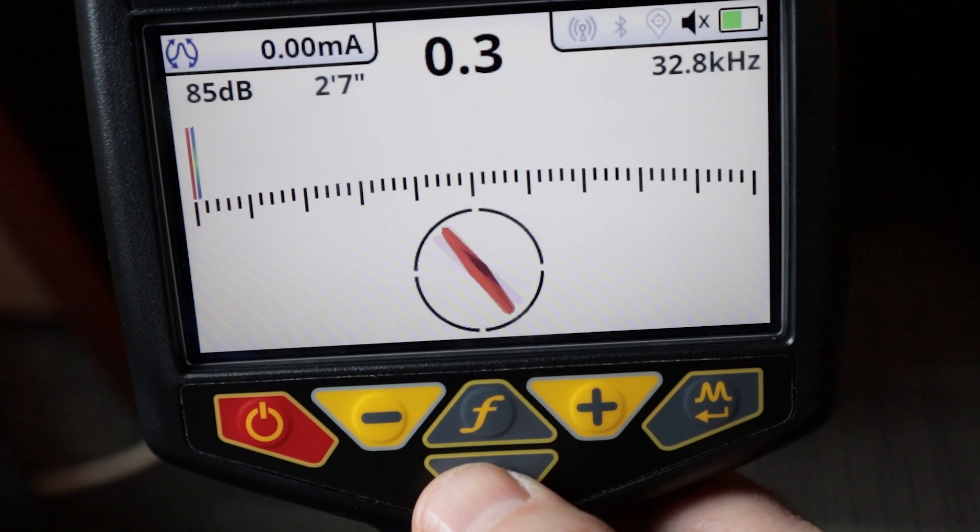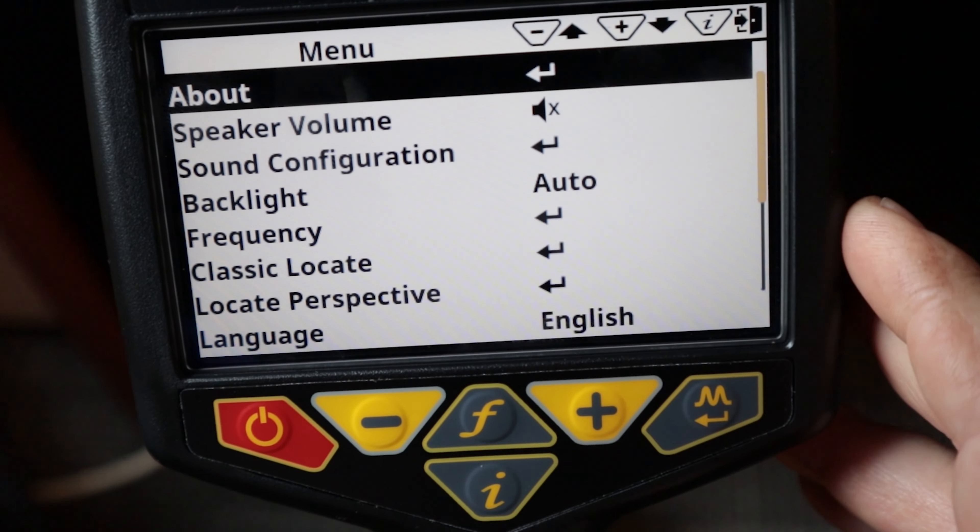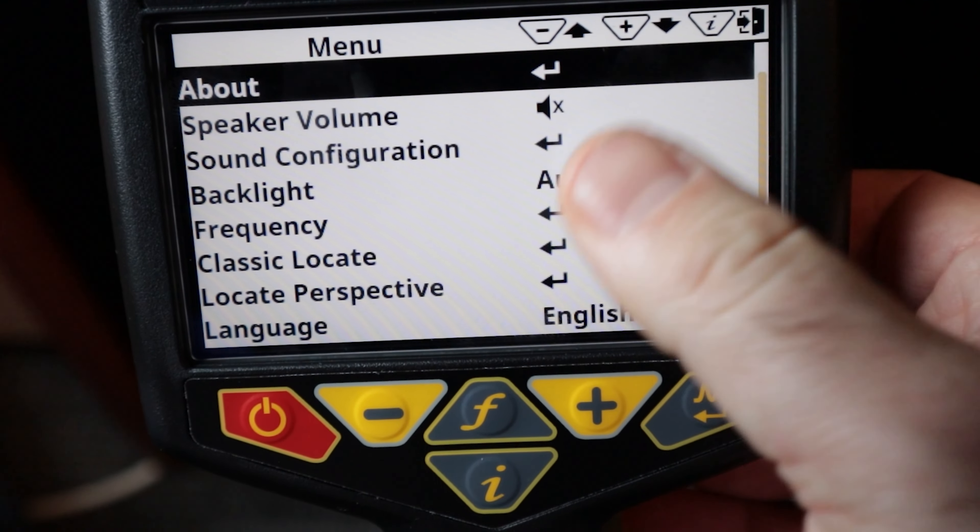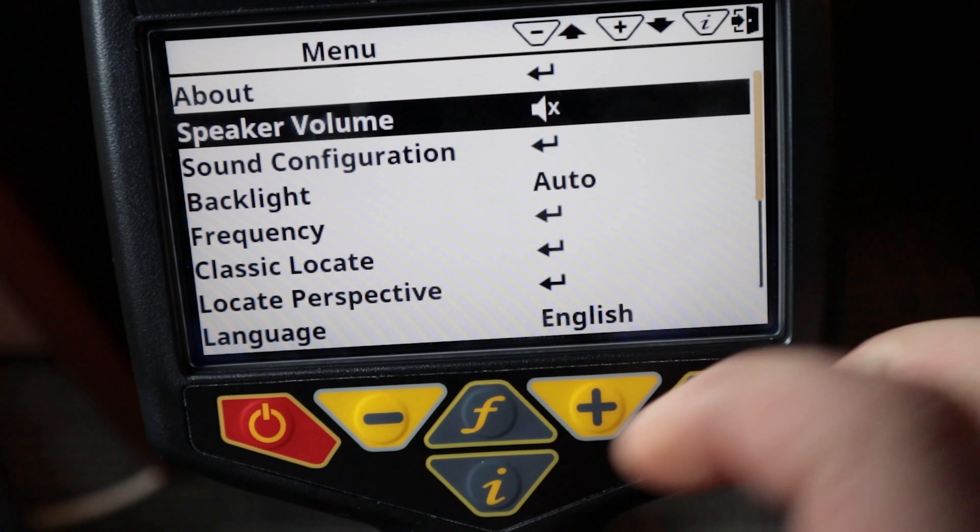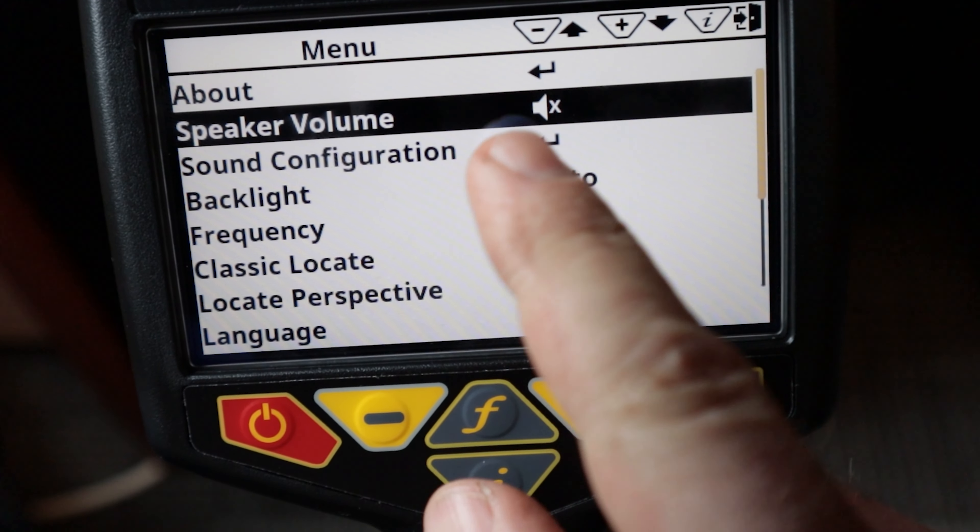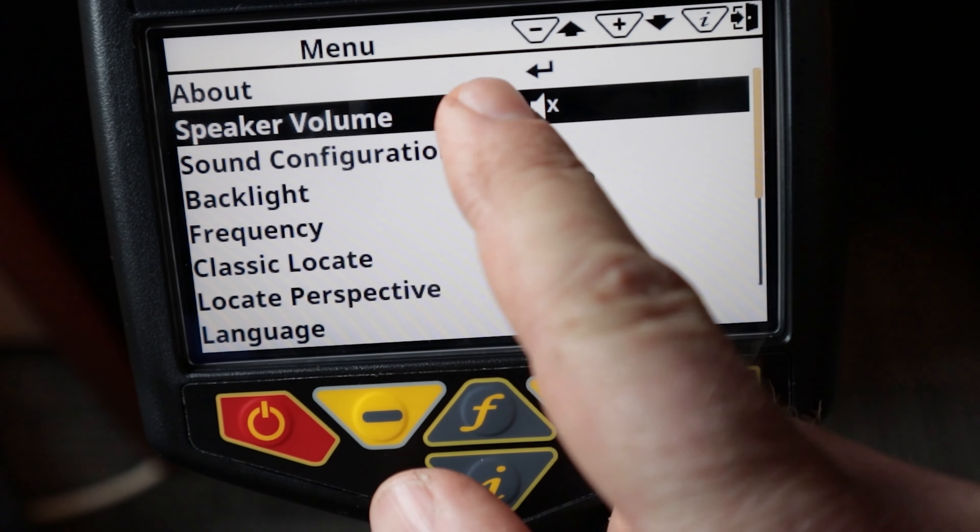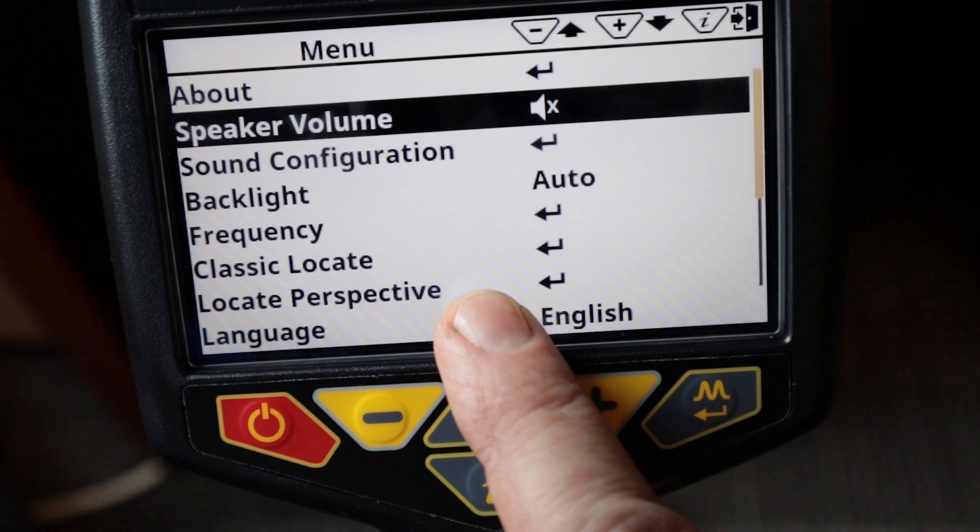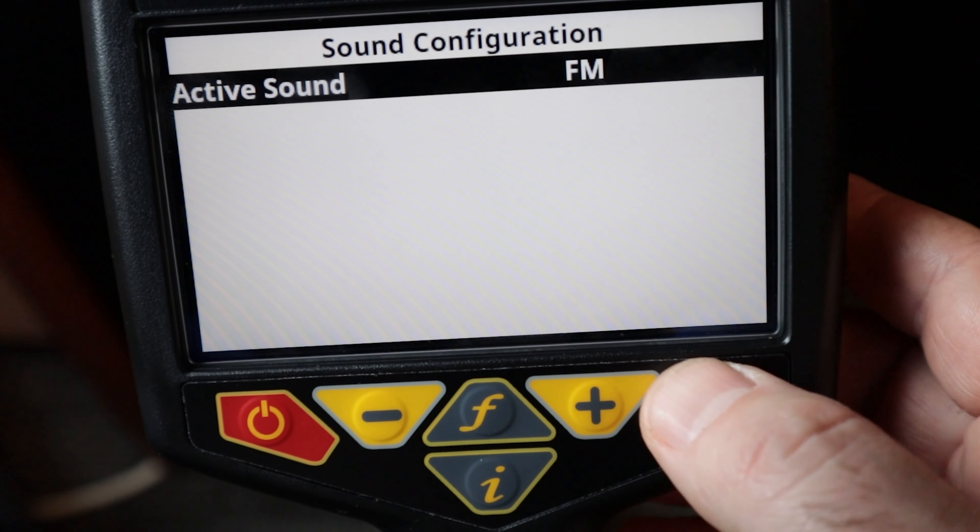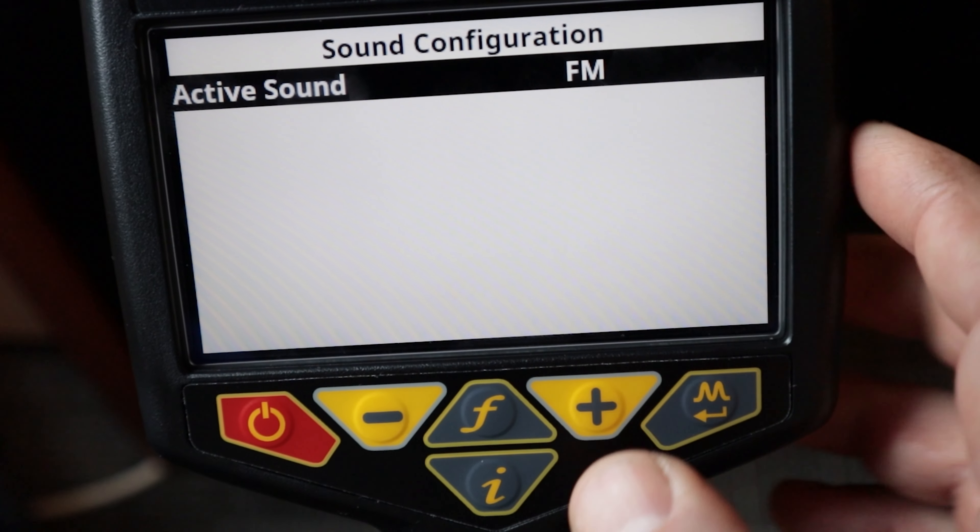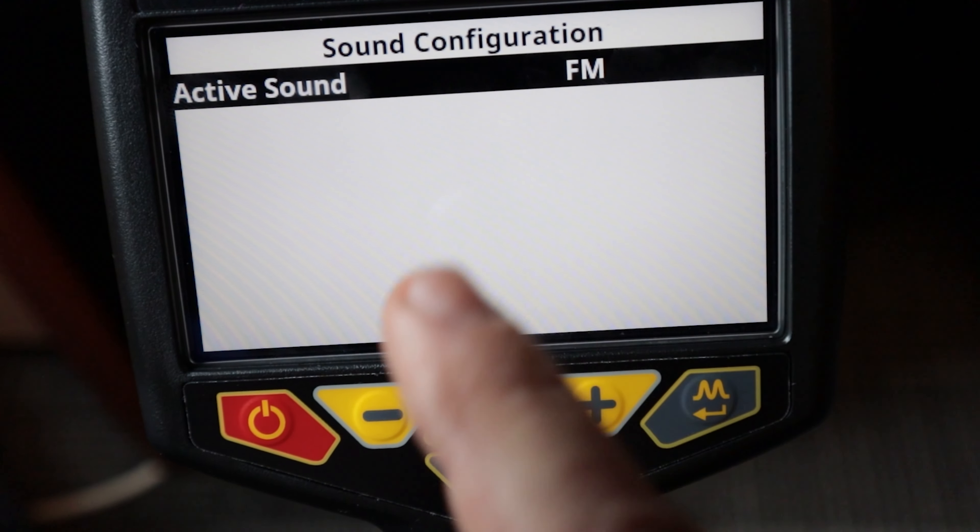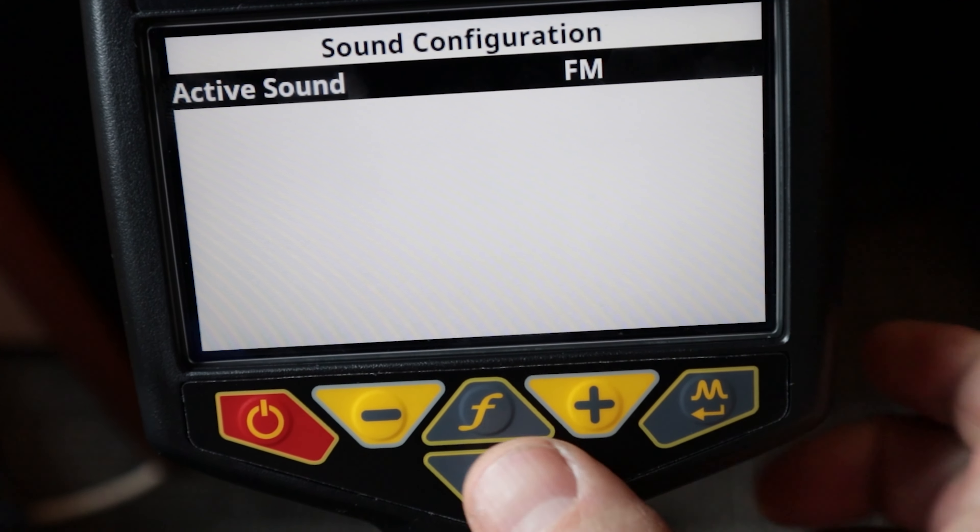The I button down here if I push and hold will get me into my menu screen. This is where I can actually customize and set up this receiver to my liking. I can use my plus and minus buttons to scroll through, I can scroll down and change my speaker volume, I can change my sound configuration, a whole bunch of different things. Let's go down to sound configuration. Two different modes here you have FM and AM and I'm going to do another video on this explaining FM and AM and why and which one I like to use.